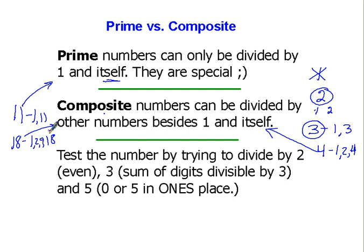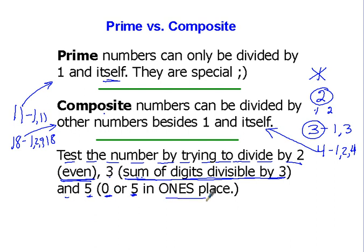When we get into larger numbers, how do we know if a number is prime or composite? We can test it by trying to divide it by two — meaning it's an even number — by three, meaning the sum of the digits is divisible by three, or by five, meaning it has a zero or a five in the ones place. If the answer is yes to any of these tests, it's a composite number — other than the numbers two, three, and five themselves, which are all prime.